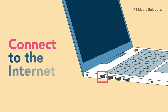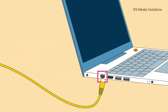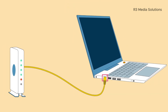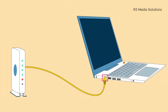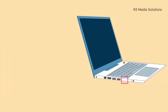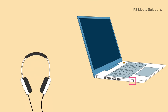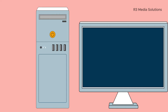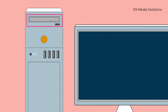The Ethernet port lets you connect to the Internet if you're not using Wi-Fi. All you need is an Ethernet cable, which you can connect to your modem or router. If your computer has an audio jack, you can use it to plug in wired headphones or speakers.